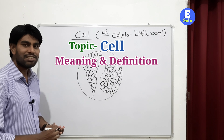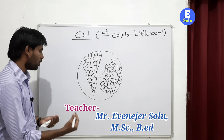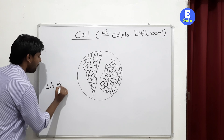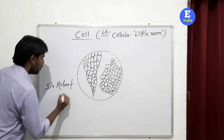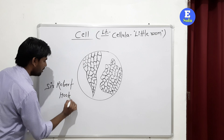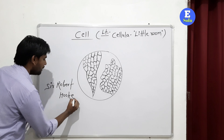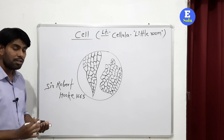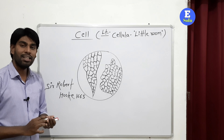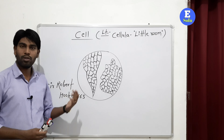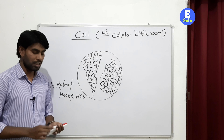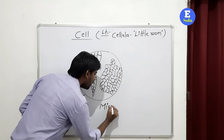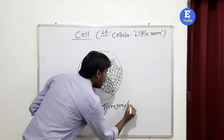Hello students, today we are going to study about the very basic concept of biology, that is the cell. The cell was discovered by Sir Robert Hooke. Sir Robert Hooke — I have written the name here — in 1665, he was an English physicist. In 1665, Sir Robert Hooke published a book whose name was Micrographia.